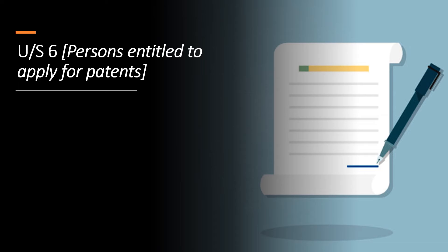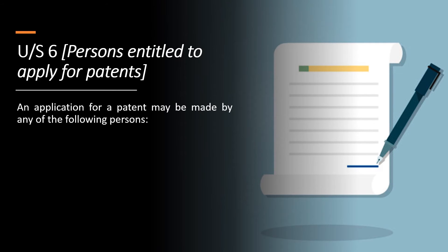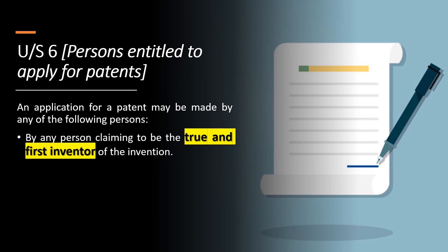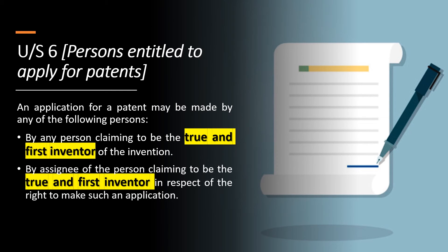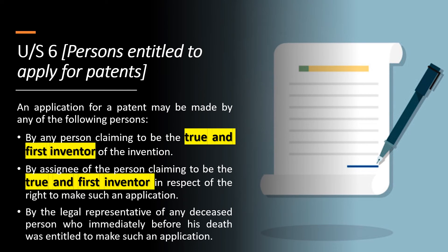Under Section 6, persons entitled to apply for patents, an application for a patent may be made by: (1) any person claiming to be the true and first inventor of the invention; (2) by the assignee of the person claiming to be the true and first inventor in respect of the right to make such an application; (3) by the legal representative of any deceased person who immediately before his death was entitled to make such an application.